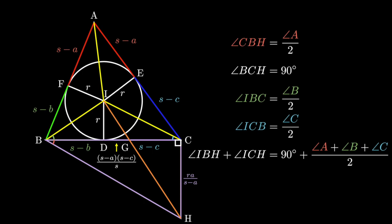Which, if you notice that the sum of the angles in a triangle is 180, is 90 plus 180 over 2, or just 180, which means that BICH is cyclic. And since BCH is 90 degrees, BIG is 90 degrees too, since they are both looking at the same arc of the circle.